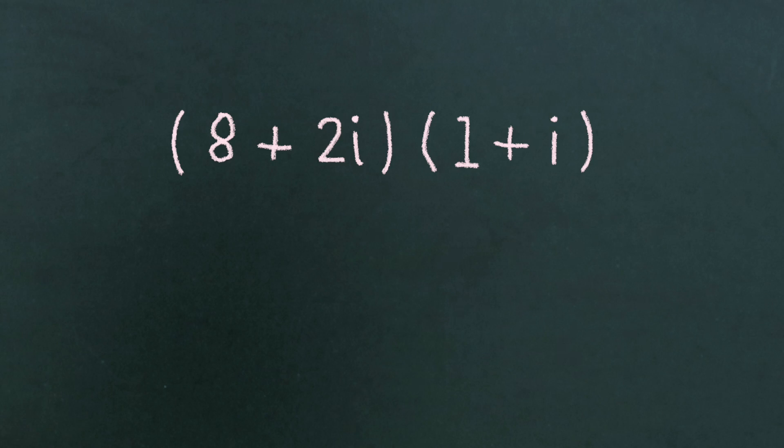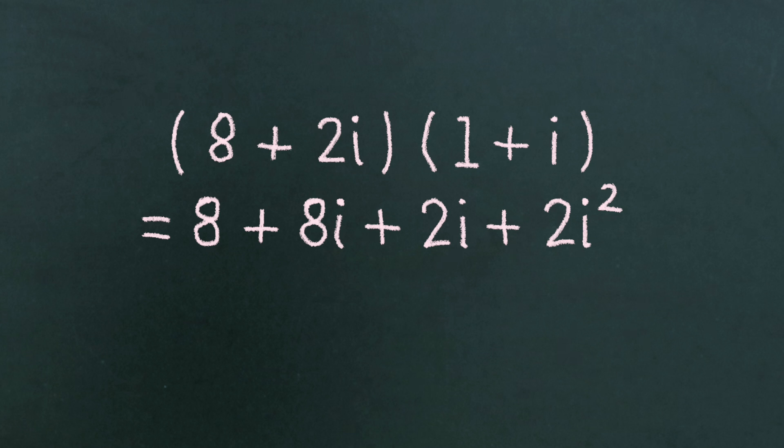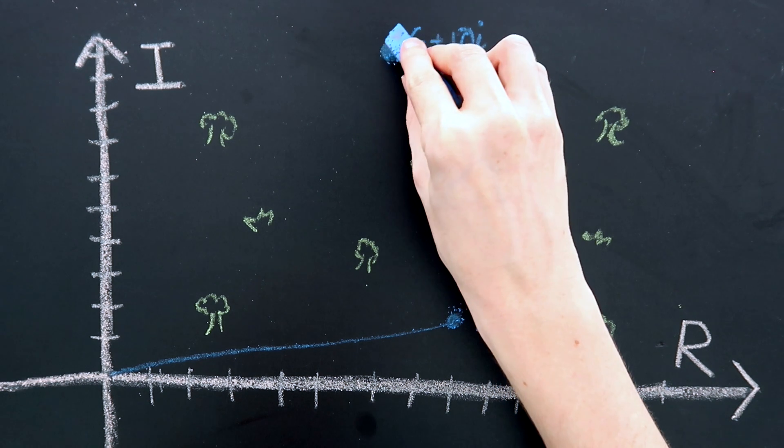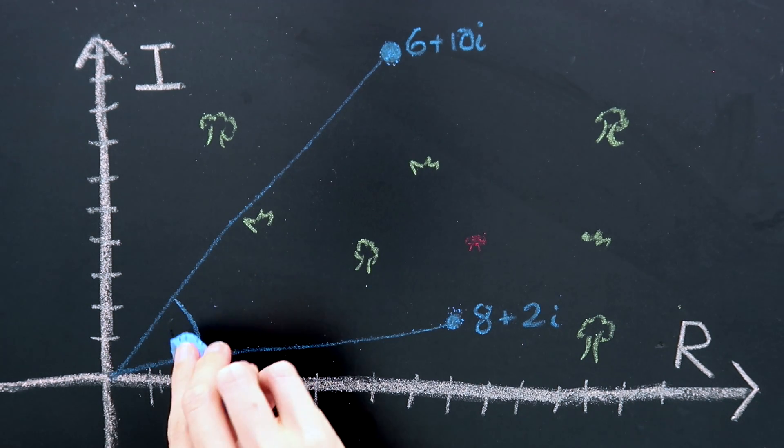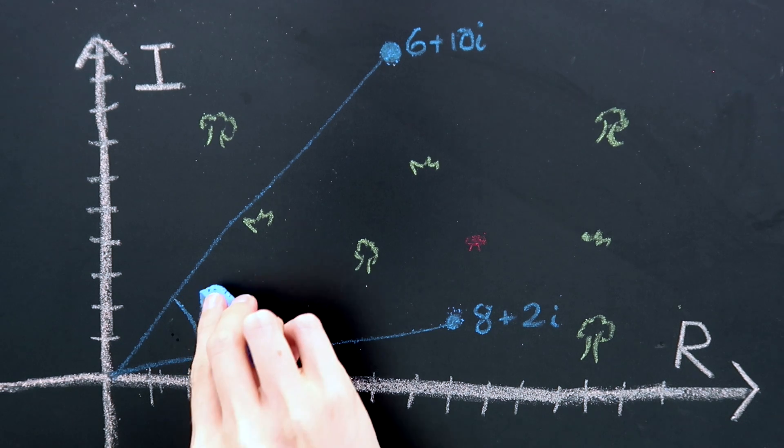Or you can multiply 8 plus 2i by 1 plus i, which we already know is a rotation of 45 degrees. 8 plus 2i times 1 plus i is equal to 8 plus 8i plus 2i plus 2i squared. Since i squared is equal to minus 1, that term becomes equal to minus 2 and we end up with 6 plus 10i. So walking along the path laid out in the direction of 6 plus 10i will be an offset of 45 degrees from the original path.